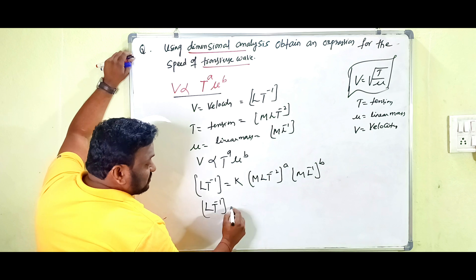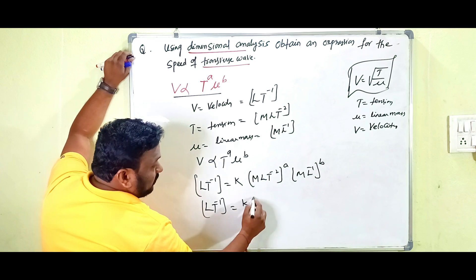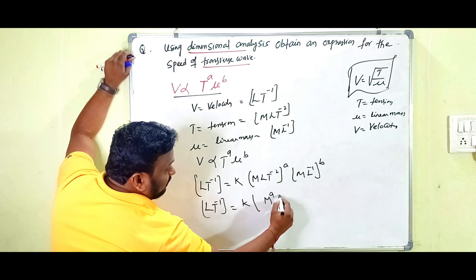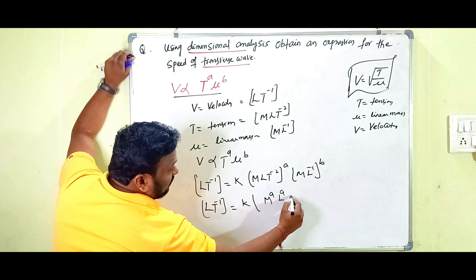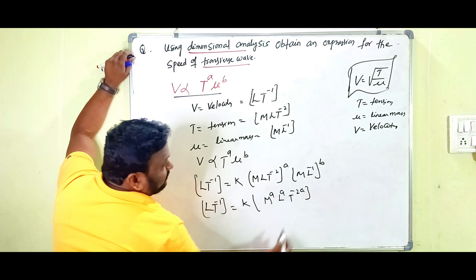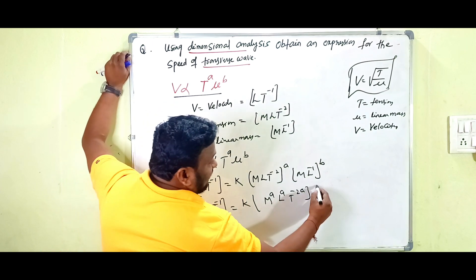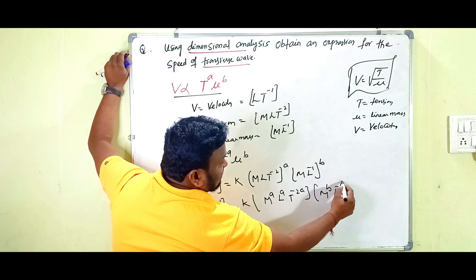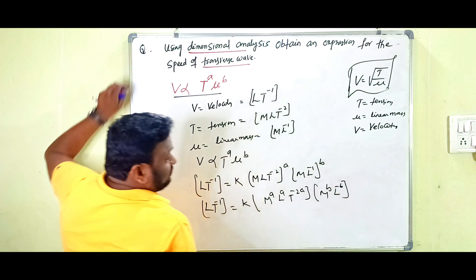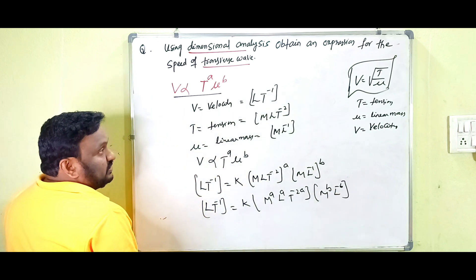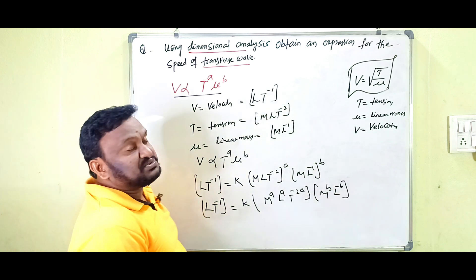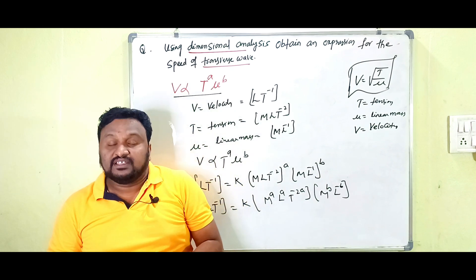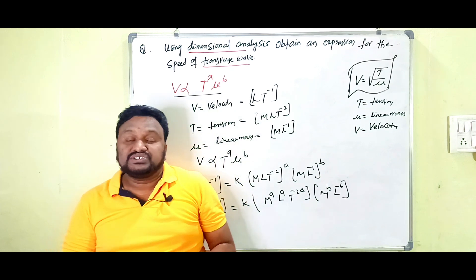Combining terms on the right-hand side: LT⁻¹ equals k · M^(a+b) · L^(a−b) · T^(−2a). Now, according to the principle of homogeneity, the dimensions of a physical quantity on the LHS must be equal to those on the RHS.